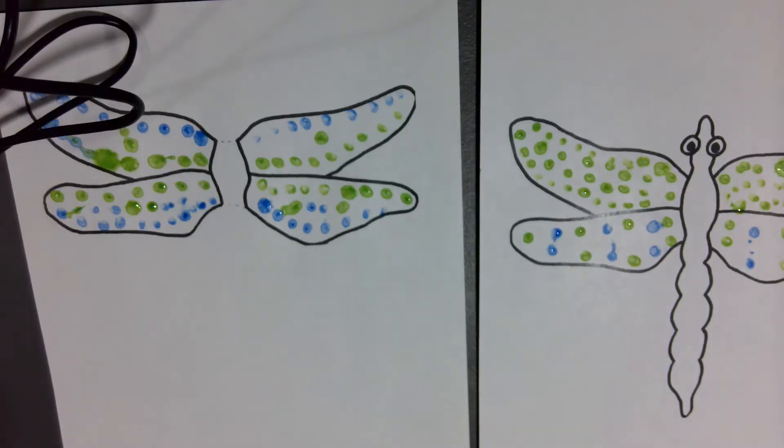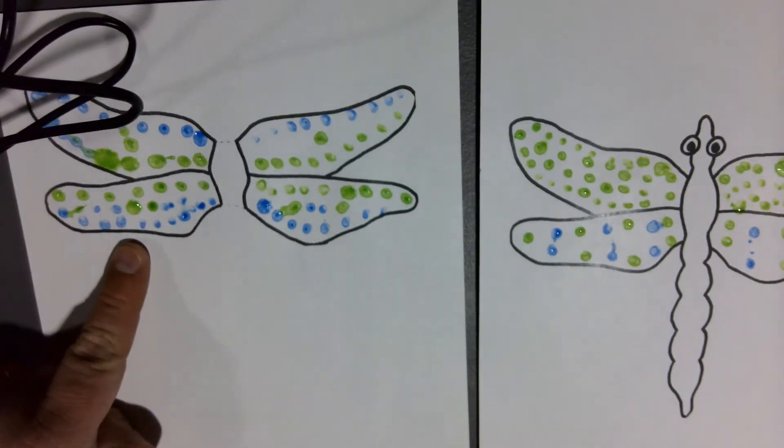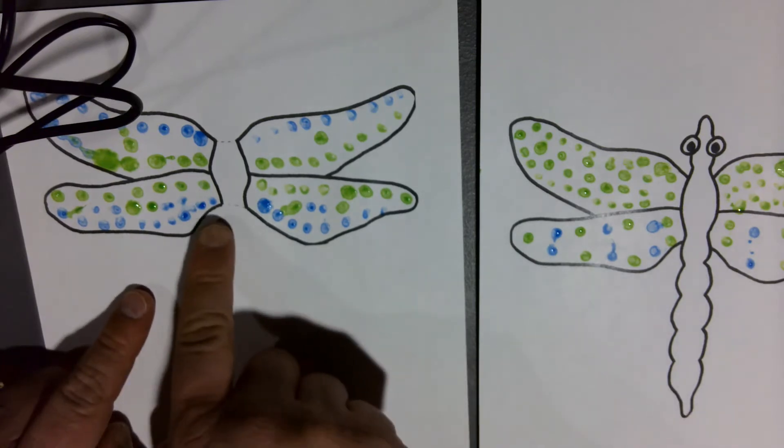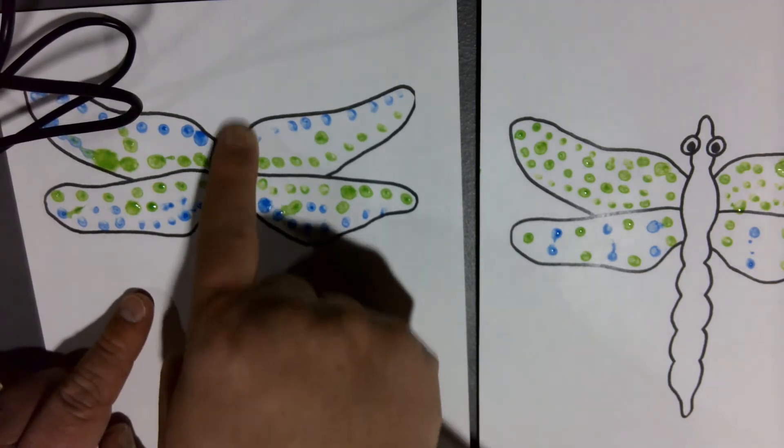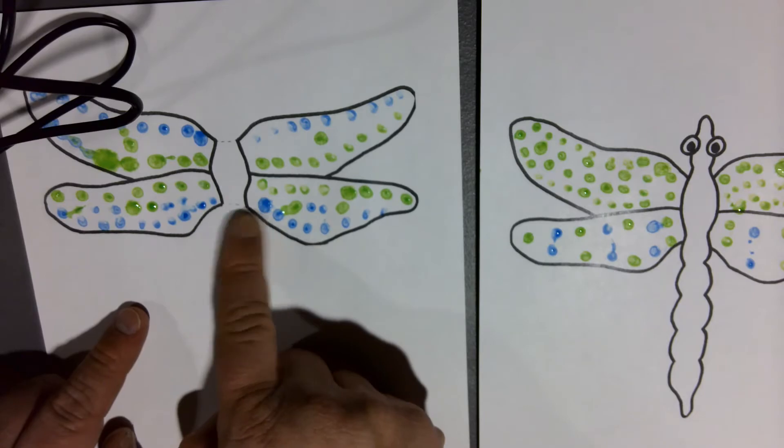Once your paint is dry, you're going to cut out this pair of wings, but make sure not to cut through the center. You want to leave the center body intact.